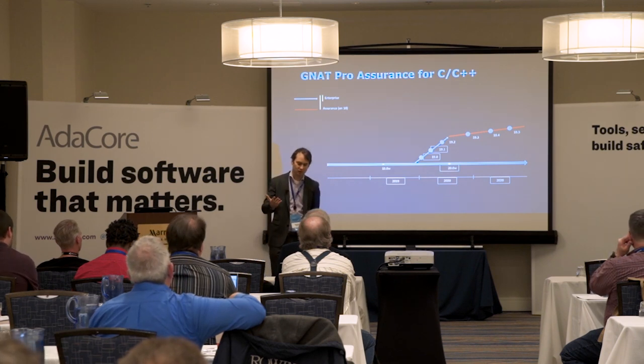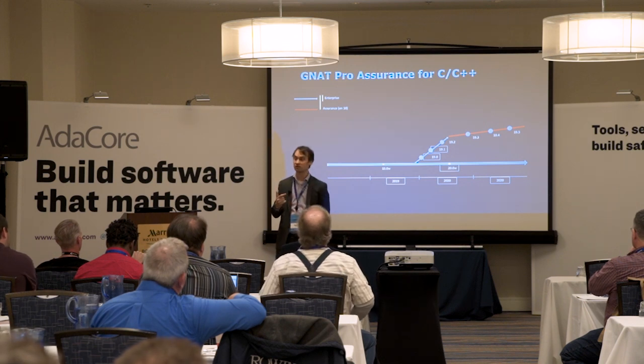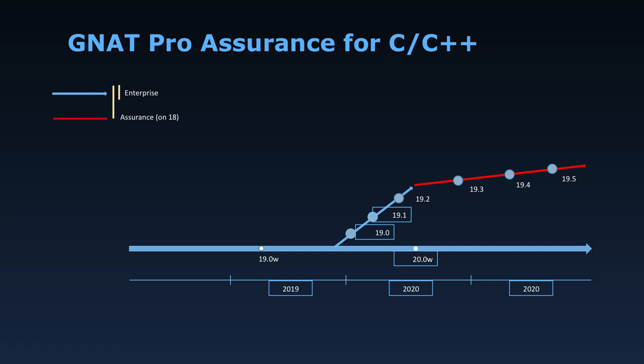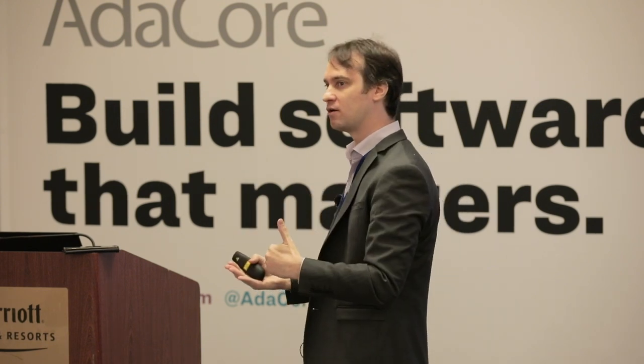A very interesting capability is GNAT Pro Assurance, which is about bringing longevity as far as possible for your product. One day you select a toolchain version — say 19.x, the stable version just released. You may want to stick to that version or that branch for the next 5, 10, or 15 years, while still needing active maintenance. If you find a bug, you'd like it fixed on the 19 branch, not necessarily on the very latest version. That is what GNAT Pro Assurance provides.